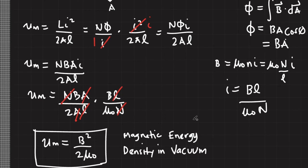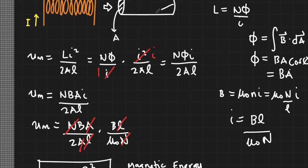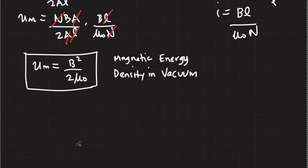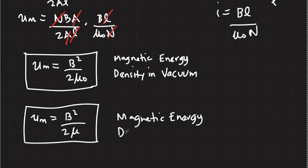Now, in our derivation, we assume that the solenoid contains a vacuum. That's why we arrive with this expression. However, if there's a material inside it, then our expression will be just in the form of B squared over 2 mu. Here, mu refers to the magnetic permeability of the material.